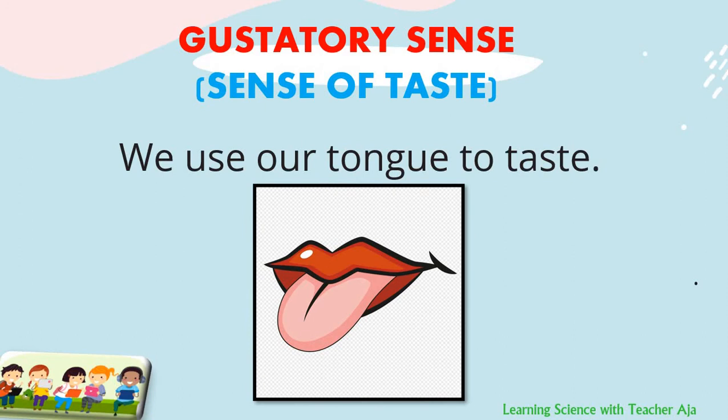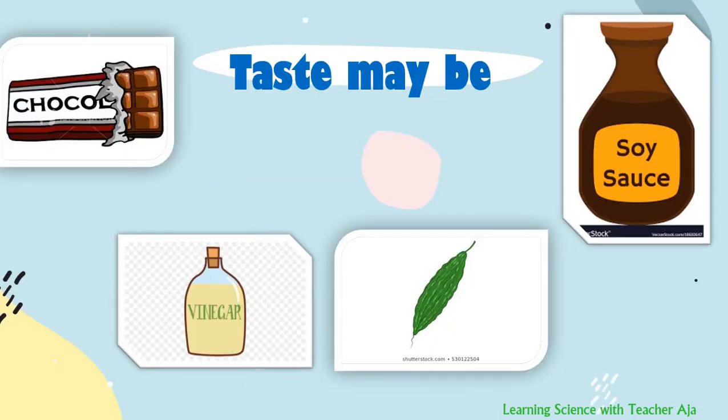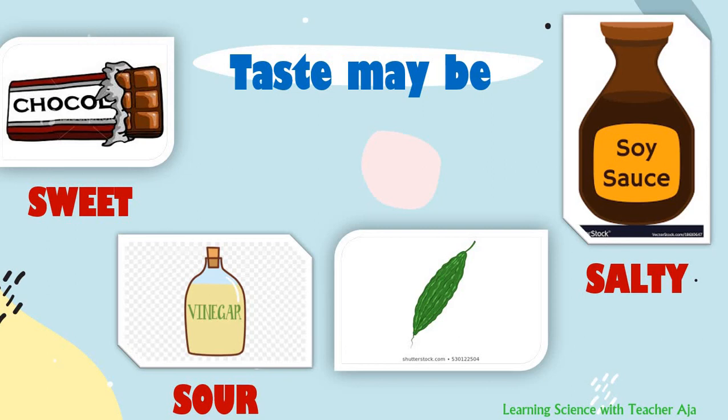Next sense is what we call gustatory sense, or the sense of taste. We use our tongue to taste. Taste may be sweet like chocolate, sour like vinegar, salty like soy sauce, and bitter like bitter gourd or ampalaya.